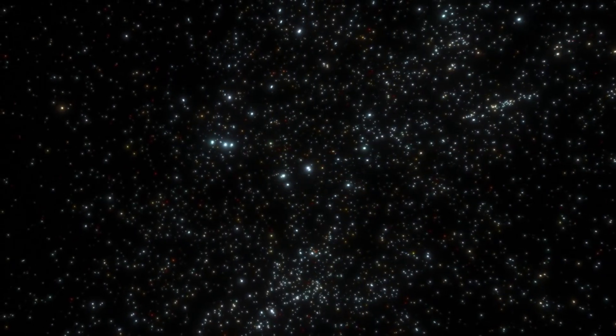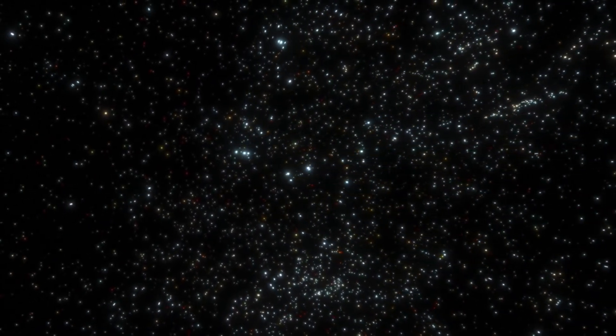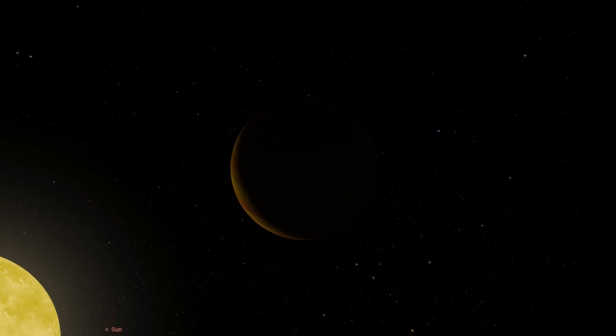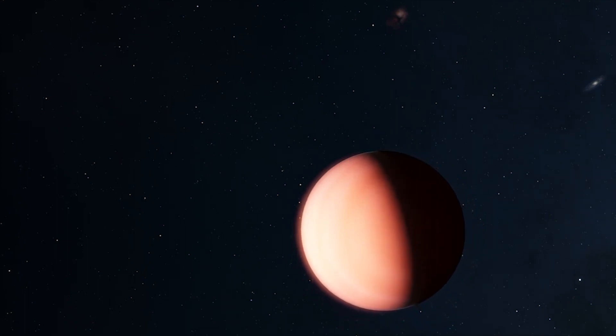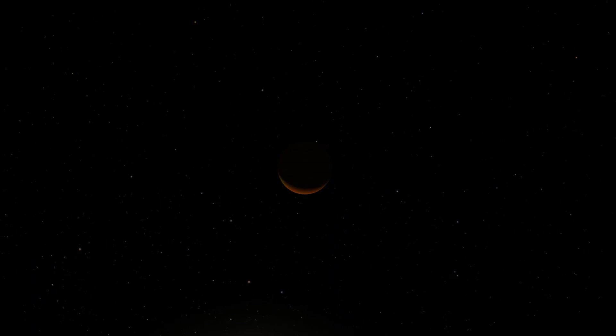The new largest planet in the universe, HATP 32b. In 2011, a new largest planet in the universe was discovered, which turned out to be larger than TRES 4b. It is located in the constellation Andromeda, 1044 light years away. This planet exceeds Jupiter in radius by just over two times.